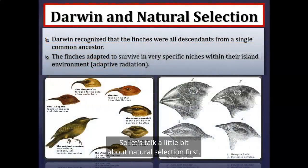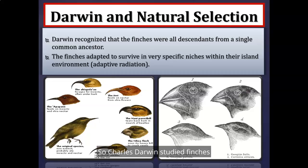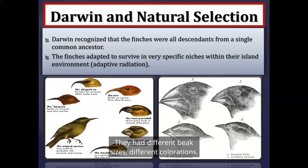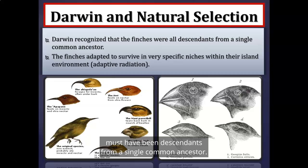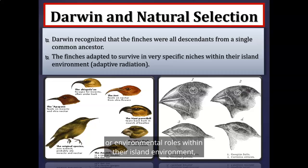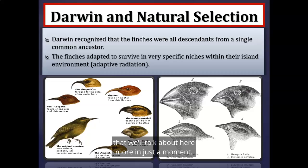Let's talk about natural selection first. Charles Darwin studied finches living on the Galapagos Islands, and he recognized that all of these finches looked similar, but also had variations and differences — different beak sizes and colorations. He realized these finches must have been descendants from a single common ancestor, adapted to survive in specific niches through a process called adaptive radiation.